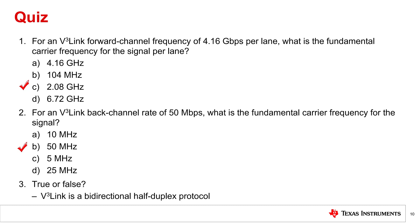Last question — true or false? vCubeLink is a bidirectional half-duplex protocol. False. vCubeLink is indeed bidirectional, but can transfer data in both directions simultaneously, meaning it is actually a full-duplex protocol.